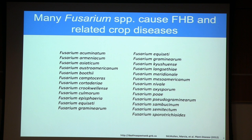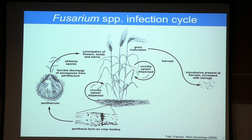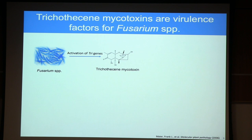Fusarium head blight is not caused by one species of fungi but by many, all in the genus Fusarium. Fungal infection starts as they are ascomycetes relying primarily on ascospores, which are ejected from fruiting bodies during spring when rain and humid weather causes ejection. These ascospores land on wheat heads, and as soon as they enter, the Fusarium fungi rapidly activate a host of genes that facilitate further infection.